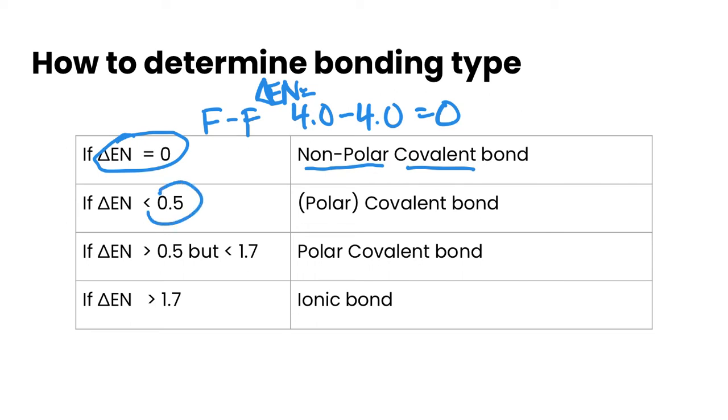If it's less than 0.5, this is still considered to be a covalent bond. It does have a little bit of polar character to it, but not very much. So you could just write a covalent bond for this type. If the values are between 0.5 and 1.7, this is a polar covalent bond. And you can feel pretty confident that that would be the case.